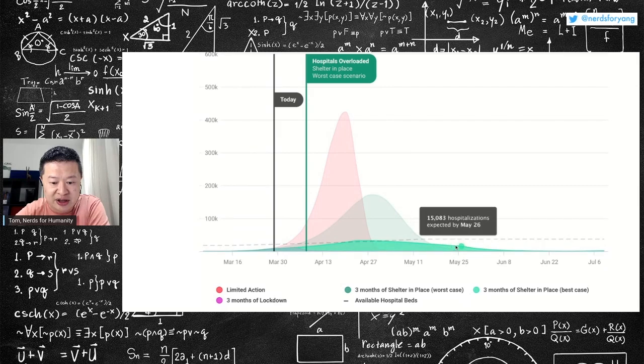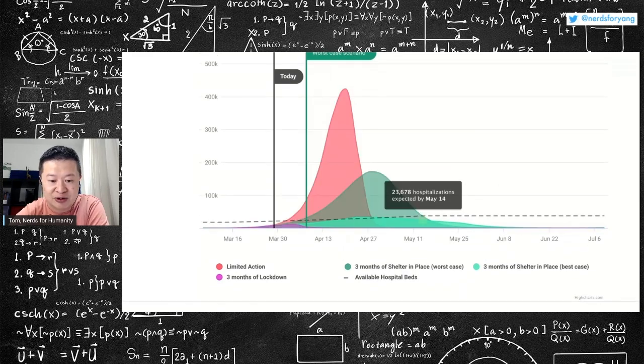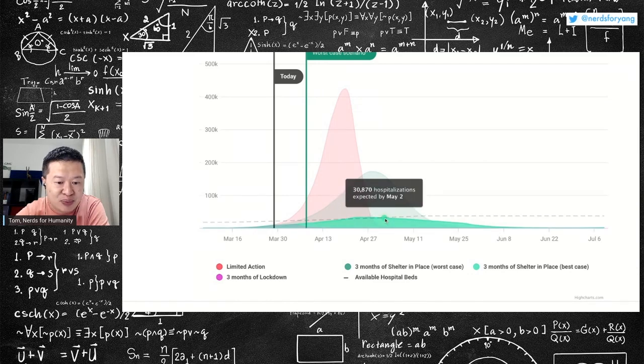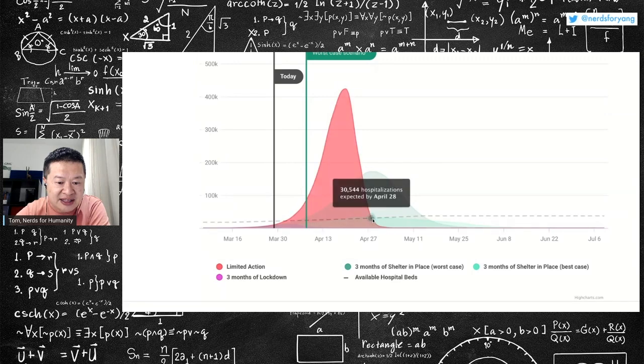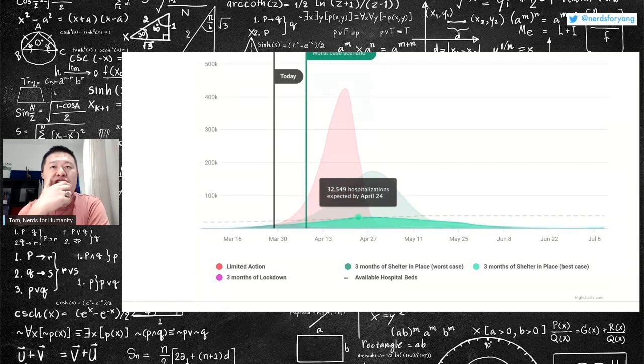This would be a problem. This would be basically five times as many people needing hospitalization as New York has beds now. And it's not just the COVID people. I mean, you've got to think about just normal people that get sick that now can't go to the hospital. Right. So that would be terrible. And then you have this other one, this light blue, which is if we do shelter in place and best case scenario, like it really works and people listen and they follow it and it doesn't spread too much.